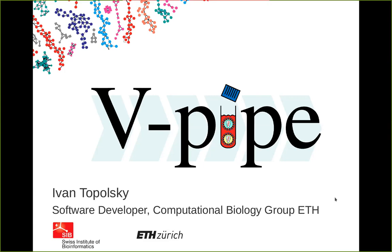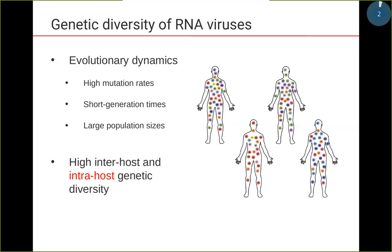Thank you, Grégoire, and welcome to this webinar about vPipe. The purpose of our research is to study RNA viruses, which have some interesting properties. They have very high mutation rates, they reproduce very quickly, and they exist in very large population sizes. This has the result that these viruses exist as a mixture both across a population and within a single patient.